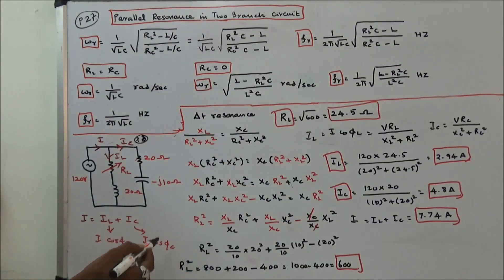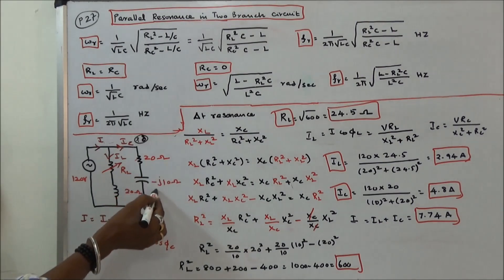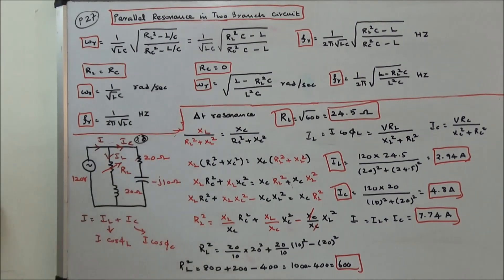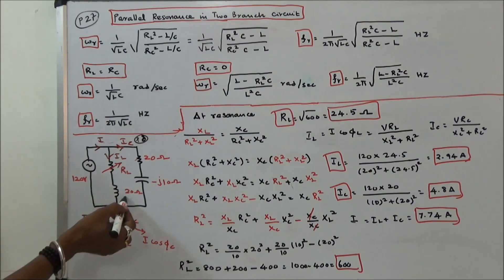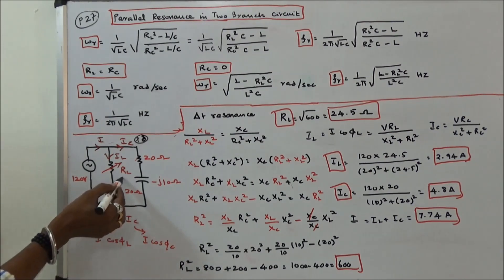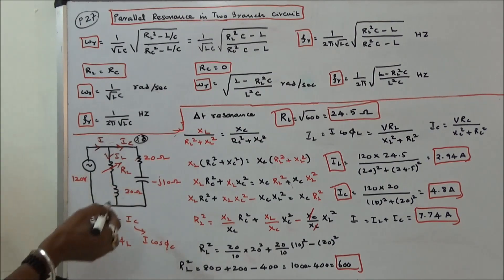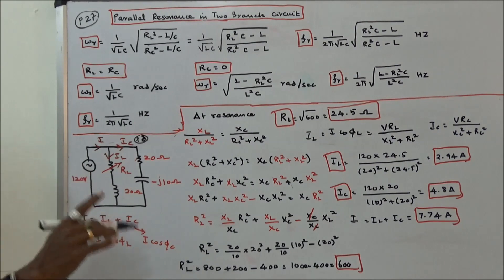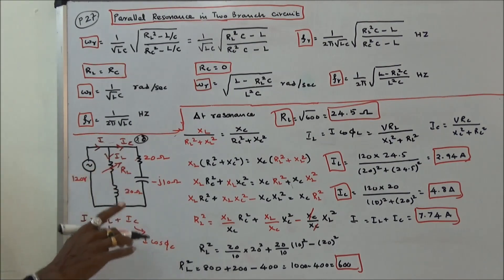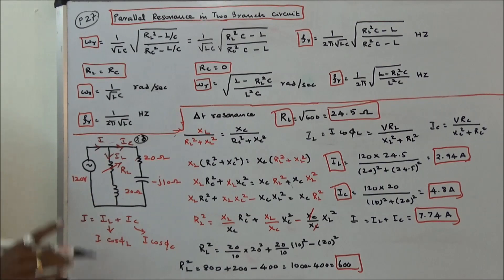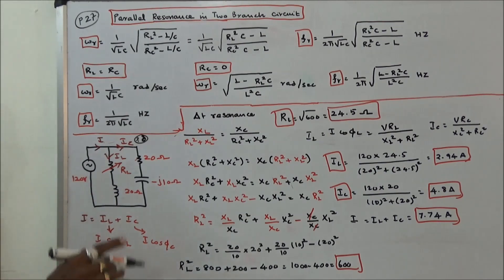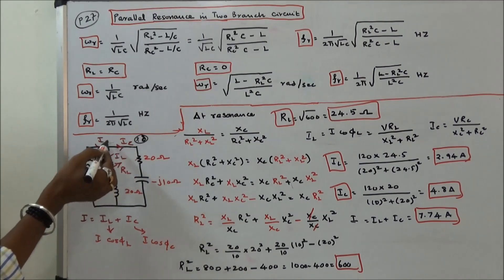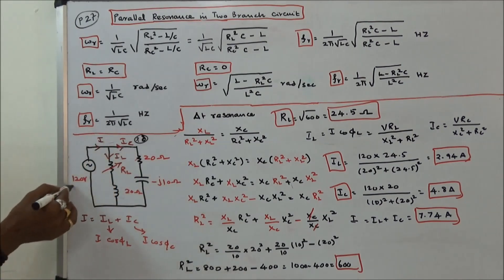The second problem: X_C = −10 ohms, R_C = 20 ohms, X_L = 20 ohms, and R_L is a variable resistor. The supply voltage is 120 volts. The question is: find the value of R_L for which the parallel circuit will resonate, and also calculate I_L, I_C, and total supply current I.